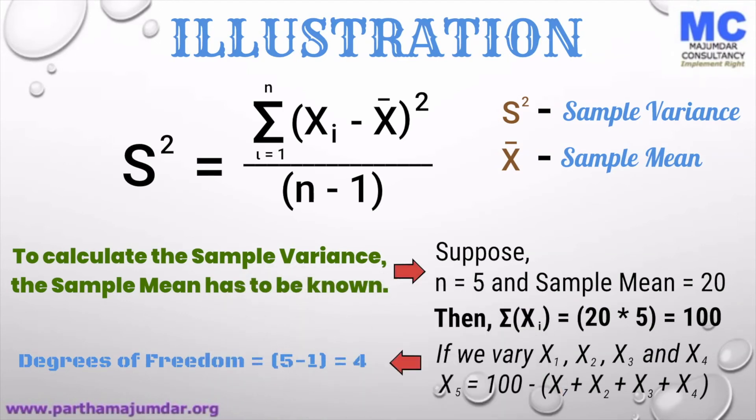So we can vary 4 variables or in other words, the degrees of freedom is 5 minus 1 equals 4, which is n minus 1.